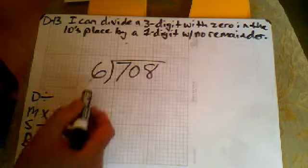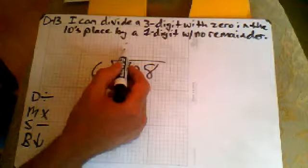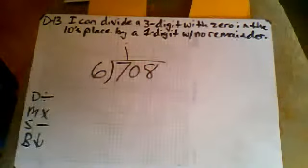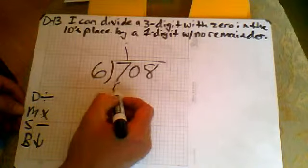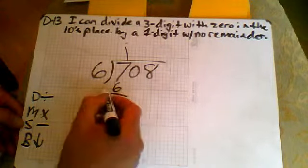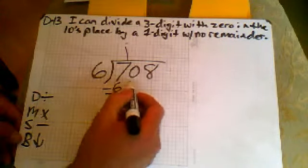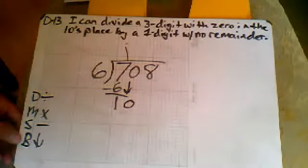So we're going to take six and divide it into seven, one time. And then multiply. One times six is six. And then subtract, we get a one. And then bring down our zero.